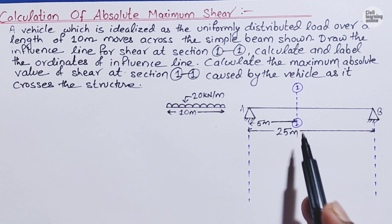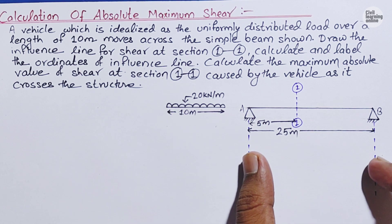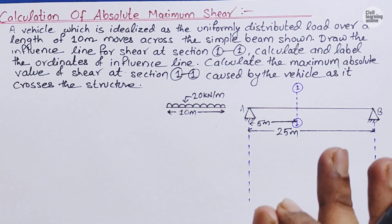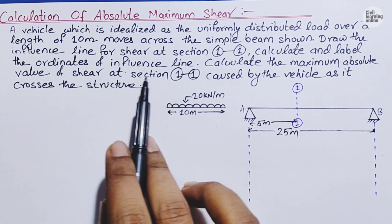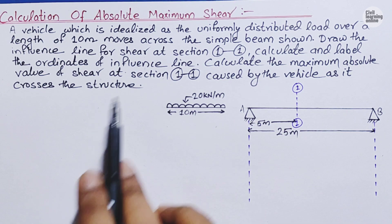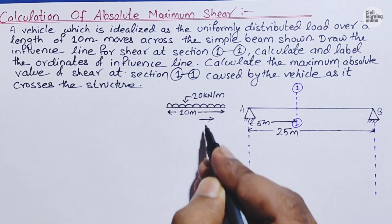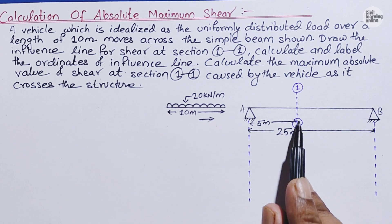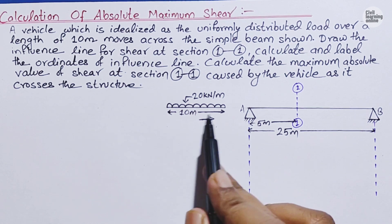The first question is to calculate and label the ordinate of the influence line diagram at section 11. The second question is to calculate the maximum absolute value of shear at section 11 caused by the vehicle as it moves across the structure from left to right. To do this, we first draw the influence line diagram for shear at section 11, find the ordinates, then place the UDL on the beam and calculate the absolute maximum shear.